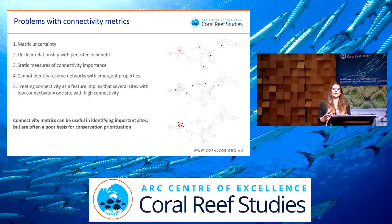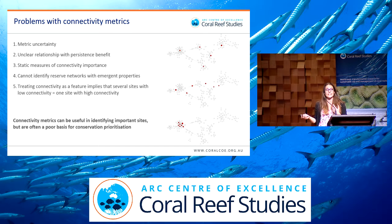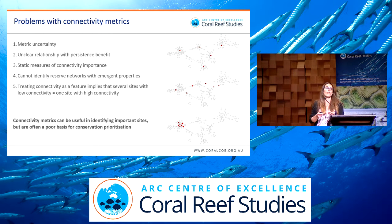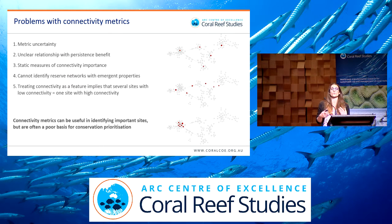Underlying that uncertainty is that for most metrics there's a really unclear relationship with persistence goals. To use betweenness centrality as an example — how much betweenness centrality is enough to ensure that a population persists? That's not something we can ecologically get our heads around. The third problem is that most of these metrics are static measures of connectivity importance, when in reality the connectivity value of sites will be dynamic with respect to the reservation status of all sites within the network.